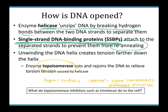If topoisomerase isn't active, DNA will keep twisting until it breaks — not good for the cell. But we do have drugs that inhibit topoisomerase: irinotecan and topotecan are two examples. These are used as chemotherapy drugs because they only work on cells that are actively using topoisomerase — cells that are dividing rapidly, like cancerous cells. Both irinotecan and topotecan are potent chemotherapies that work by inhibiting topoisomerase.